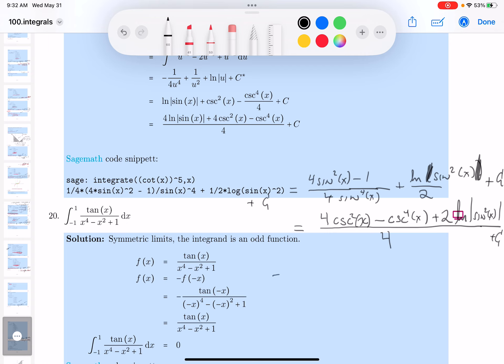I'm getting close. I'm going to write a little bit more neatly now. I get four. Four cosecant squared X minus cosecant to the fourth.